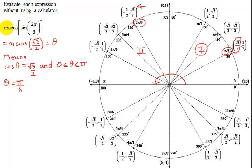So what is the inverse cosine of the sine of 2π over 3? Hopefully, the answer is just π over 6. Thanks.